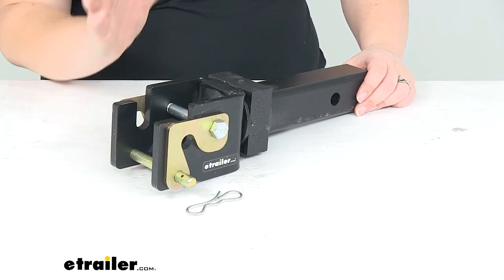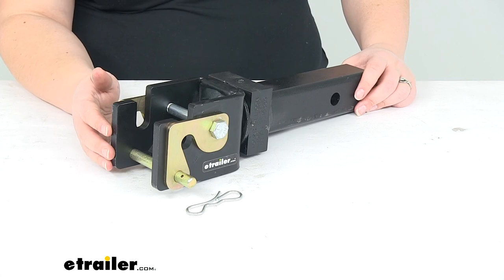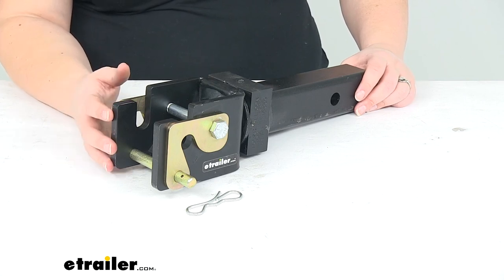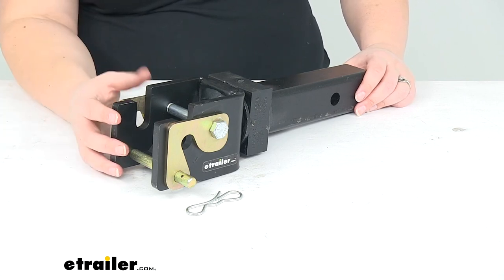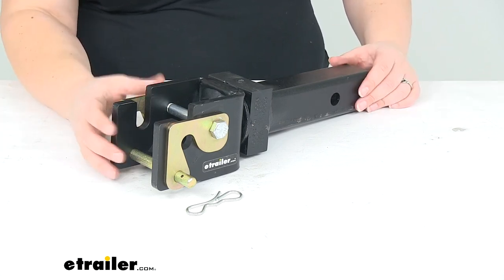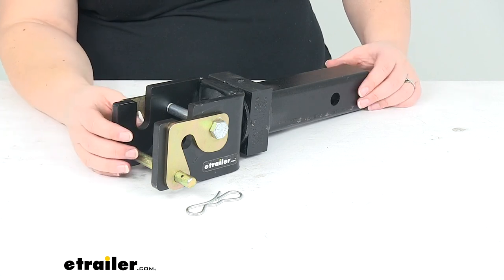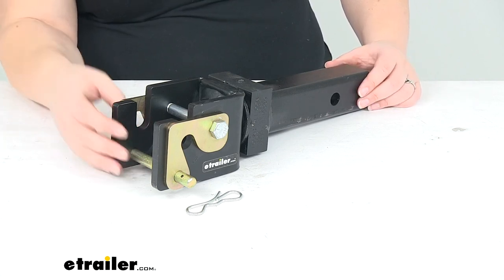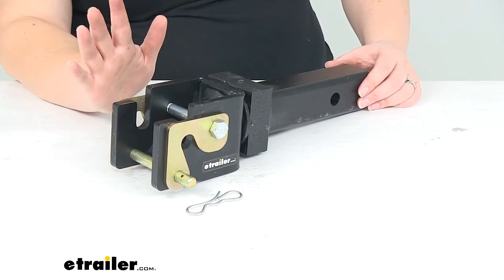But that's pretty much going to do it for our look at the lock and roll articulating trailer hitch for two inch receivers. I hope this video has been helpful in deciding if this is going to be the right thing for you. And if you have any additional questions, feel free to reach out to us here at eTrailer.com. We pride ourselves on providing you with all the information you need to make life a little bit simpler. Thanks for watching.